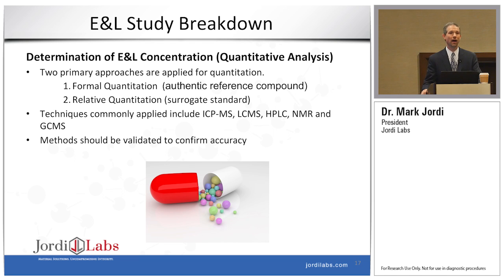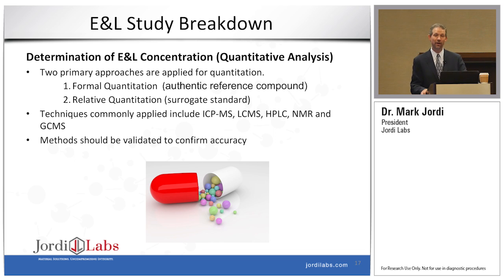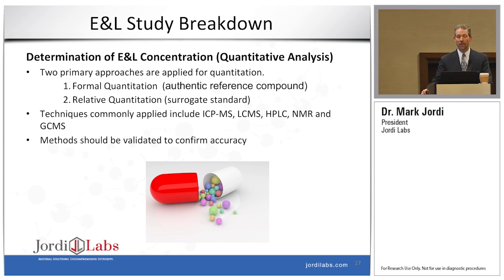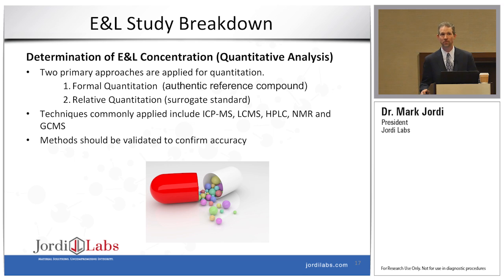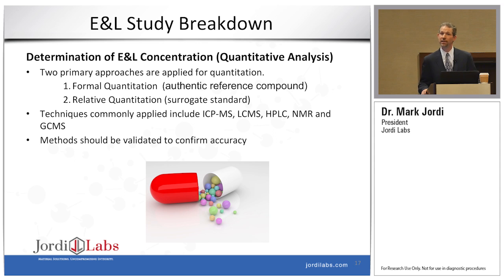Once we have identified what is present in the extractables and leachables profile, the next important step is to quantify it. This is an area I have a lot of passion for because I feel the way this is currently done in the industry is not very good, to be honest. There are two strategies that are widely applied: formal quantitation, which generally gives very good quantitative values, and relative quantitation, in which a surrogate standard is utilized and you get a relative value — and depending on which techniques you're using, that may or may not be appropriate.